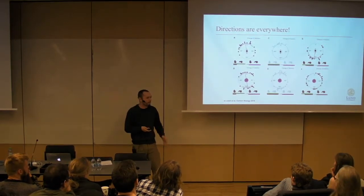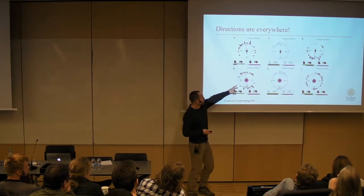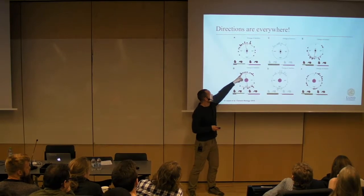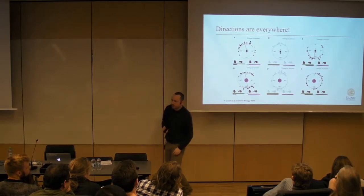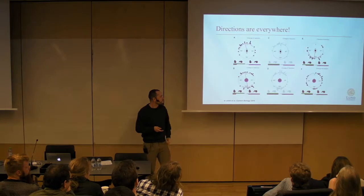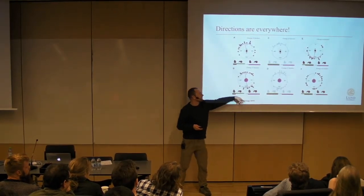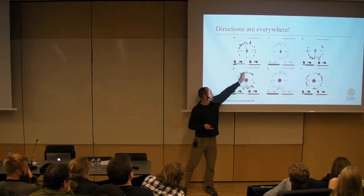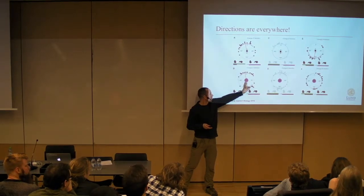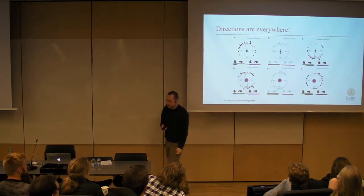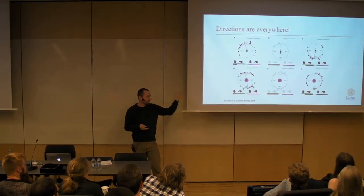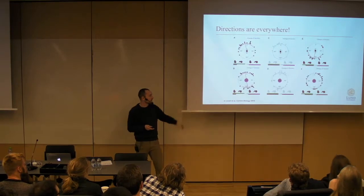Dung beetles have excellent and very sensitive vision, so they're very interesting from that respect. In the arena, arrows indicate mean direction, the black points are the vectors taken by the animal to exit the center of the arena on repeated trials. The zero here is the central stimulus, and this represents the mean direction for the animal. They showed that animals do a dance on top of their dung ball to get landmarks in their environment and follow those paths.